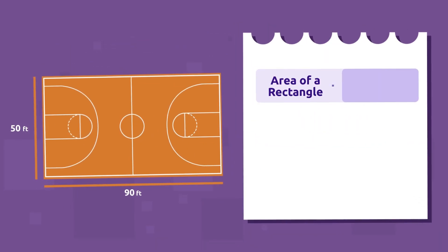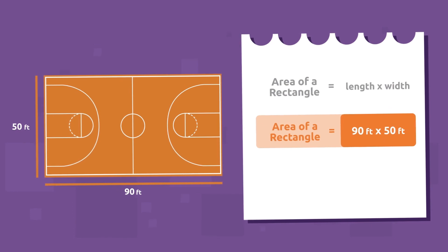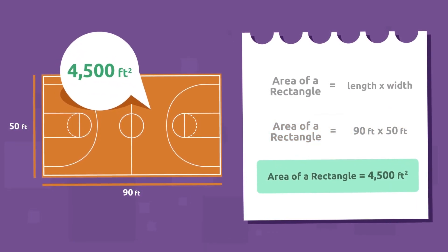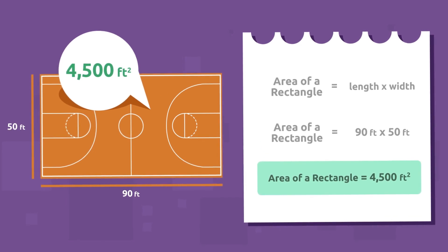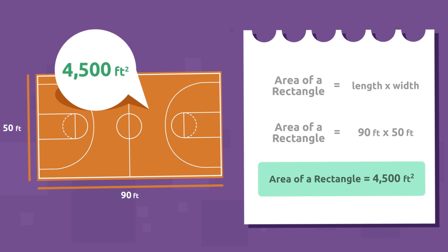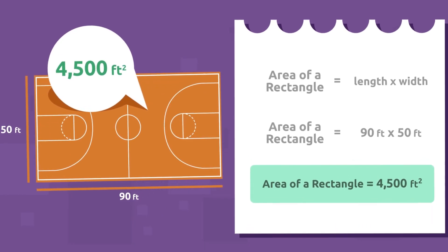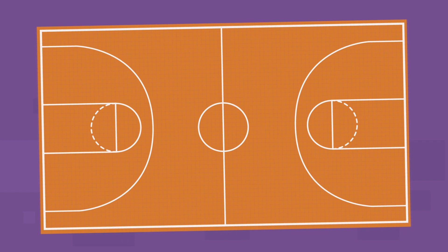Remember that we must multiply length times width. 90 times 50 equals 4,500. The principal will need 4,500 square feet to build the basketball court. If we had the patience to count them all, you would see that there are exactly 4,500 one-square-foot squares on this court's surface.